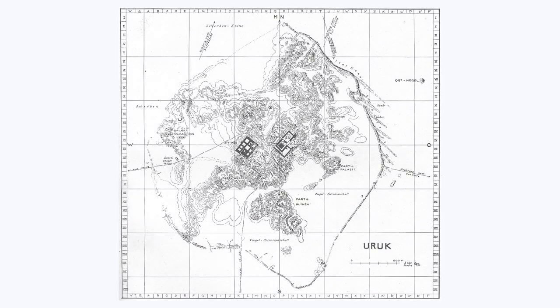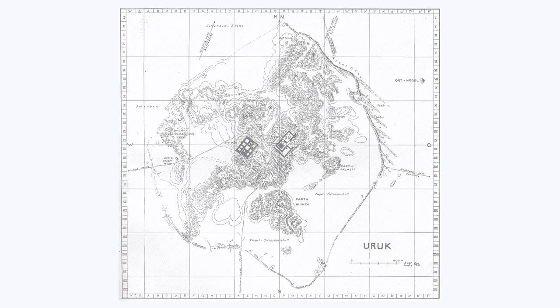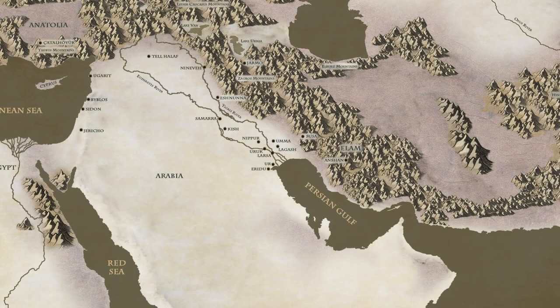In the late Uruk period, the urban site far exceeded all others. Its surface area, the scale of its monuments, and the importance of its administrative tools unearthed there indicate that it was a key center of power. It is therefore often referred to as the first city, but it was the outcome of a process that began many centuries earlier and mostly outside Mesopotamia.